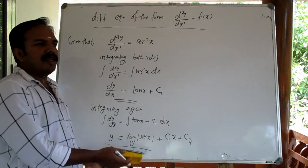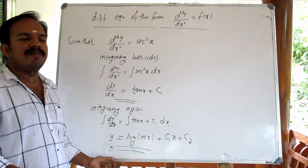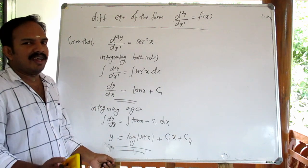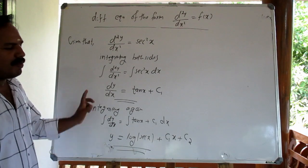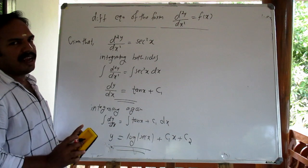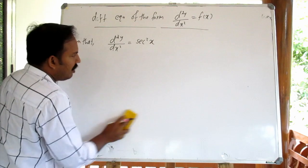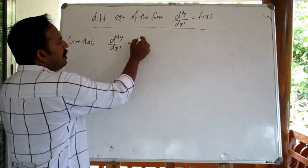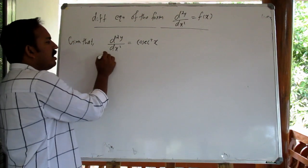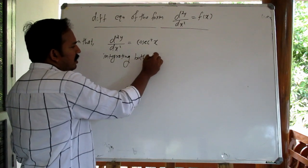Okay, carefully now. Let's move to the next question. The next problem: d squared y by dx squared equal to cosec squared x. Integrating both sides — this is how we proceed.